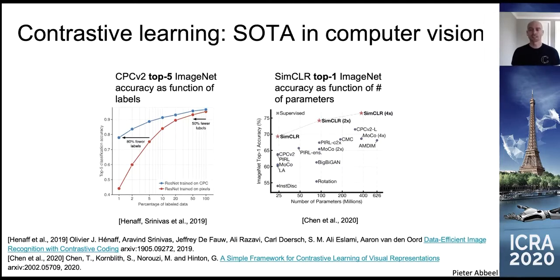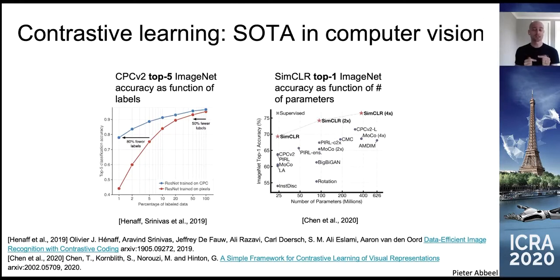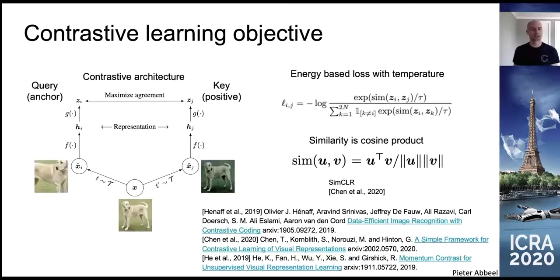Then a couple months ago, collaborators showed with SimCLR — a new approach to contrastive learning — that with a large enough neural network, SimCLR on the top right is outperforming even supervised learning. These were two big breakthroughs showing that with contrastive learning it's possible to learn from unlabeled data some representations inside your neural net that then allow you to learn from a small amount of labeled data and still do really well.